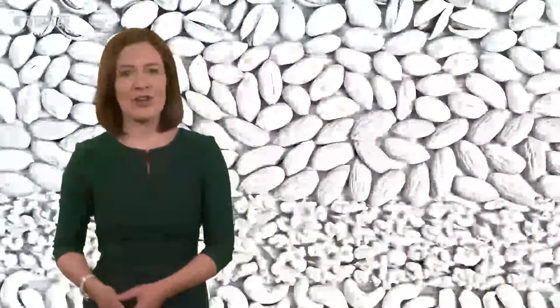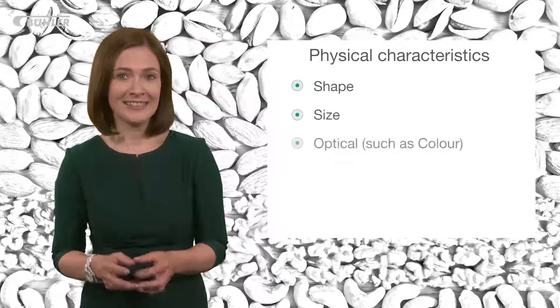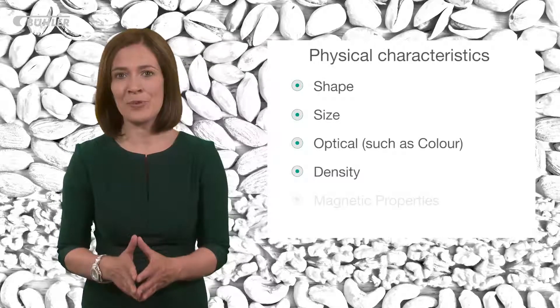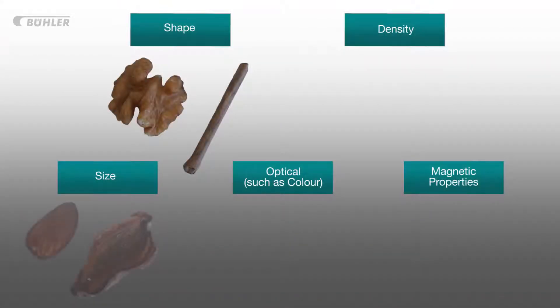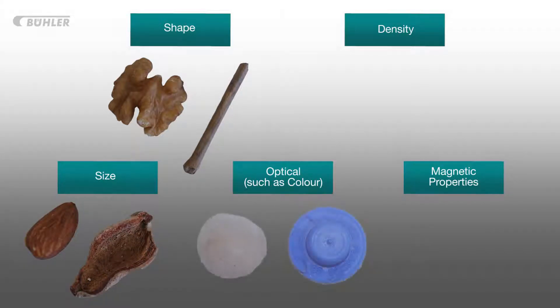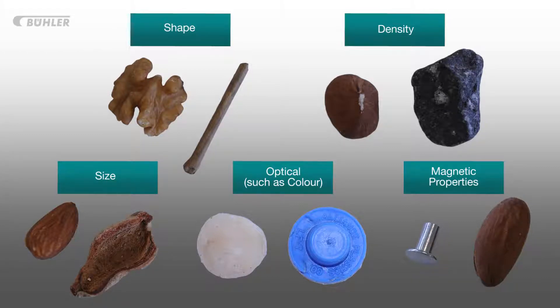We've briefly looked at the technologies used to remove foreign bodies during a best practice nut processing line, but we now need to understand the importance of shape, size, colour, density and magnetic properties when removing foreign bodies. Foreign bodies can only be removed from the good product if any of their physical characteristics differ from those of the actual good product itself. The most common physical characteristics are shape, size, colour, density and magnetic properties.